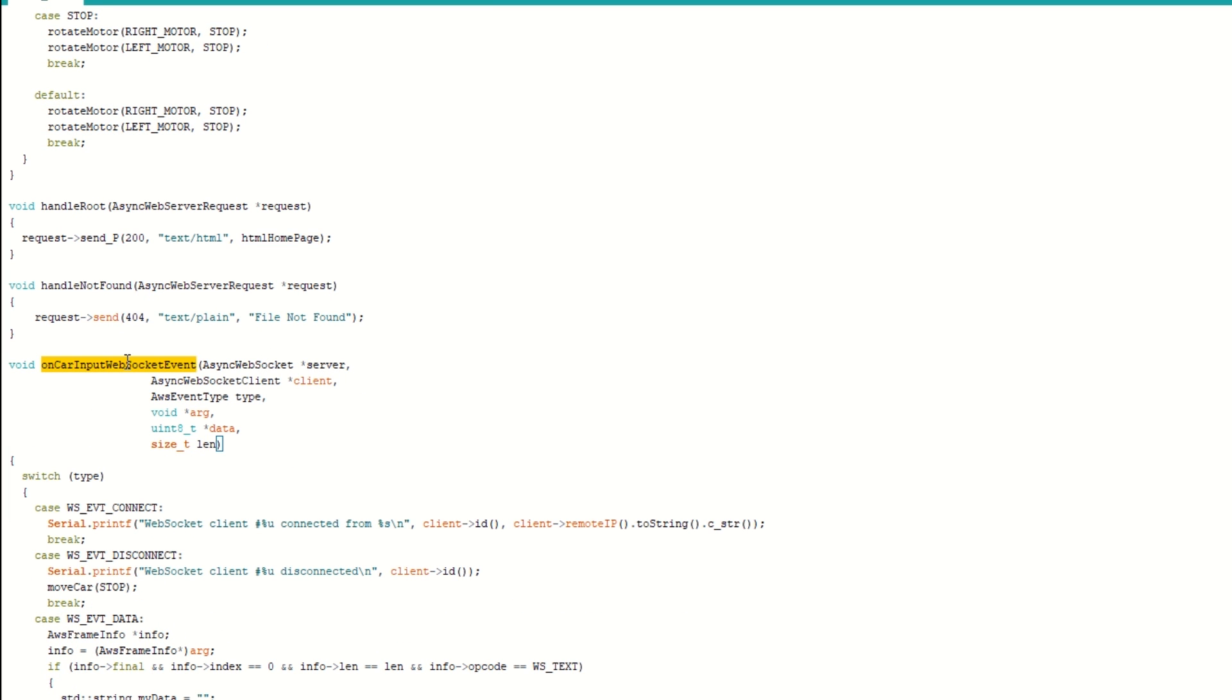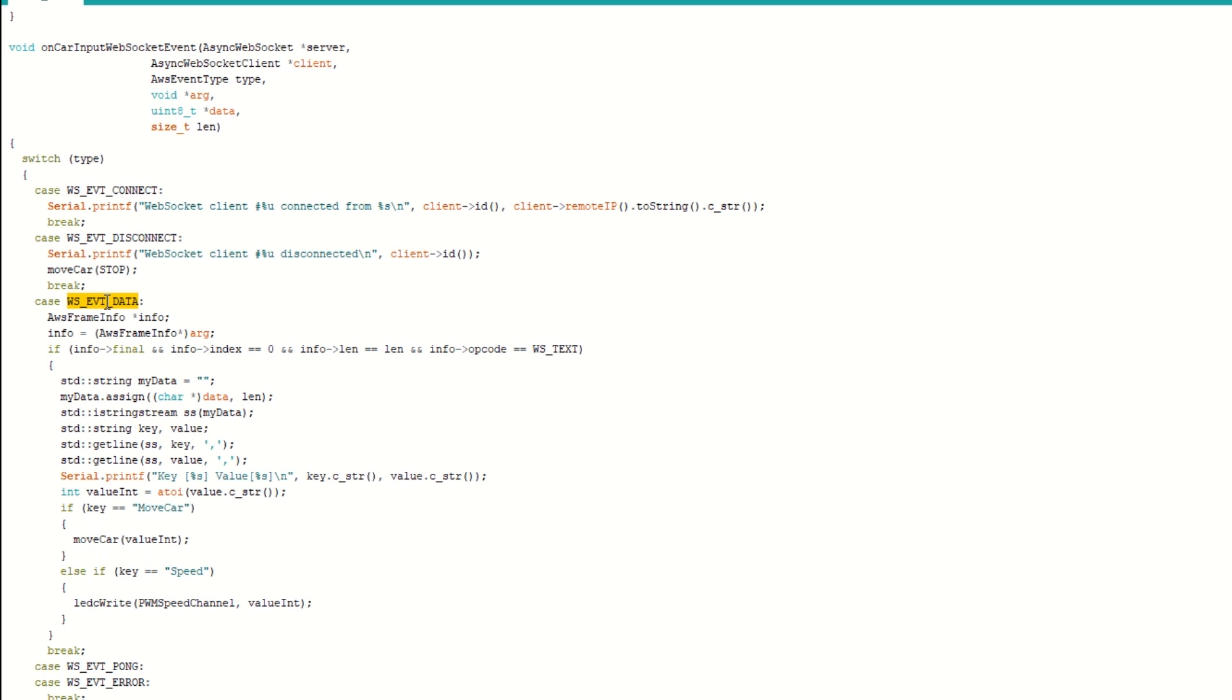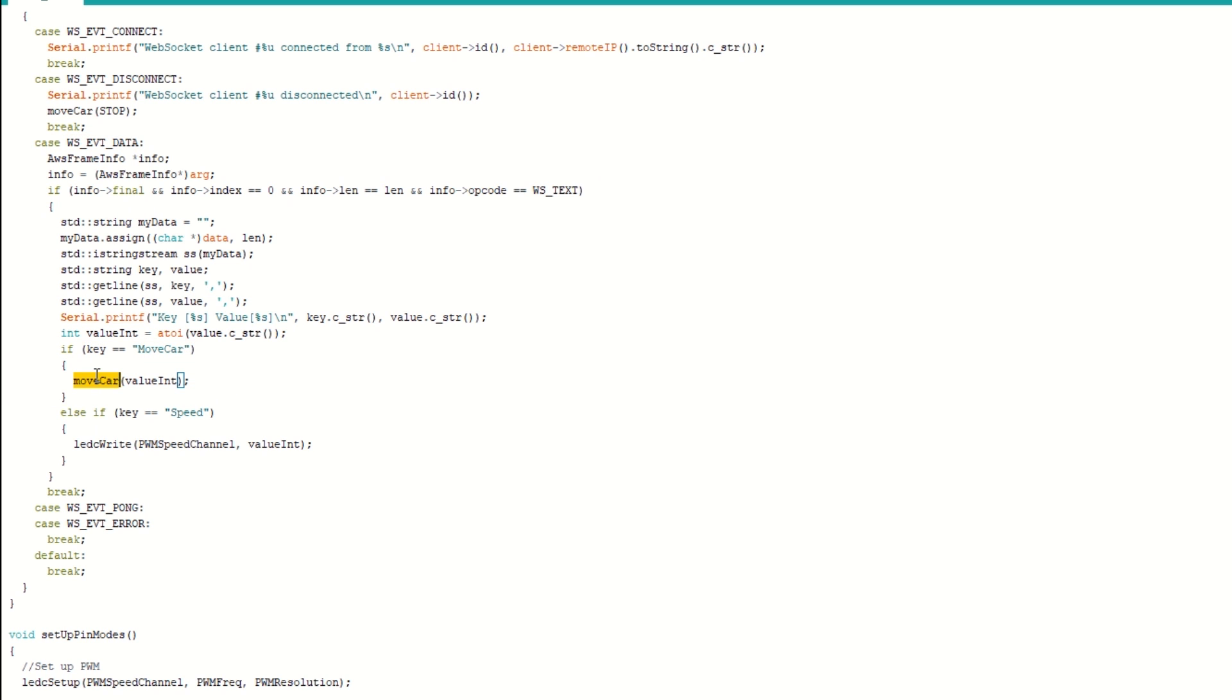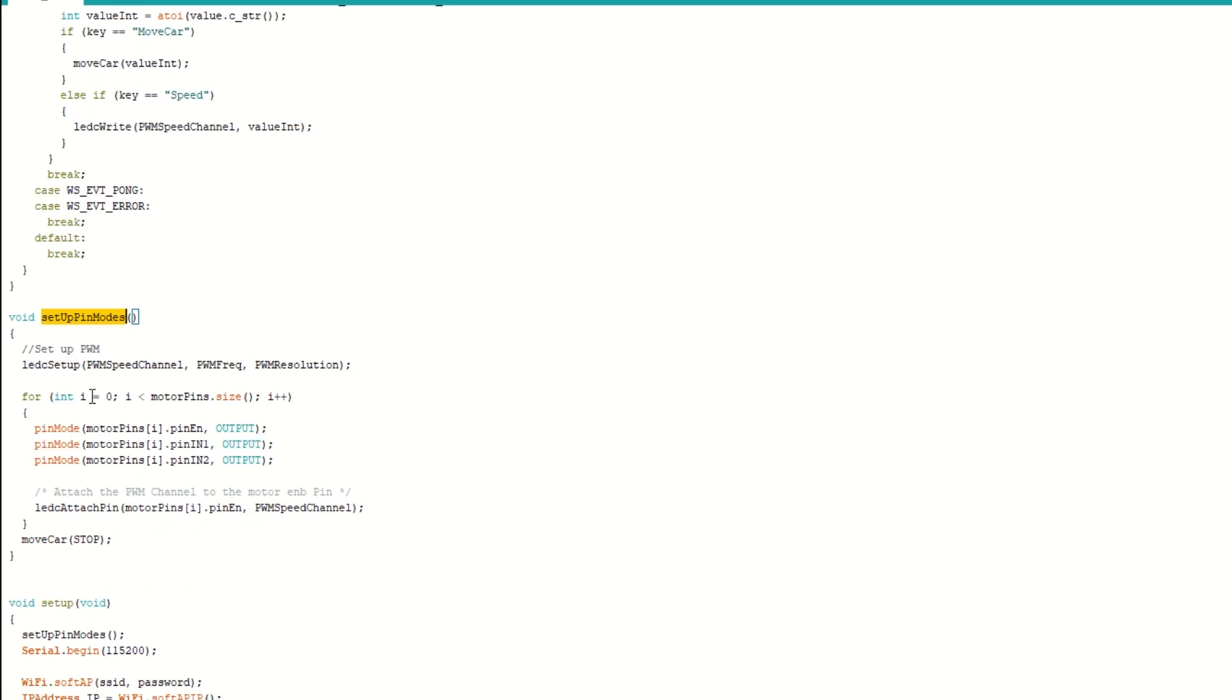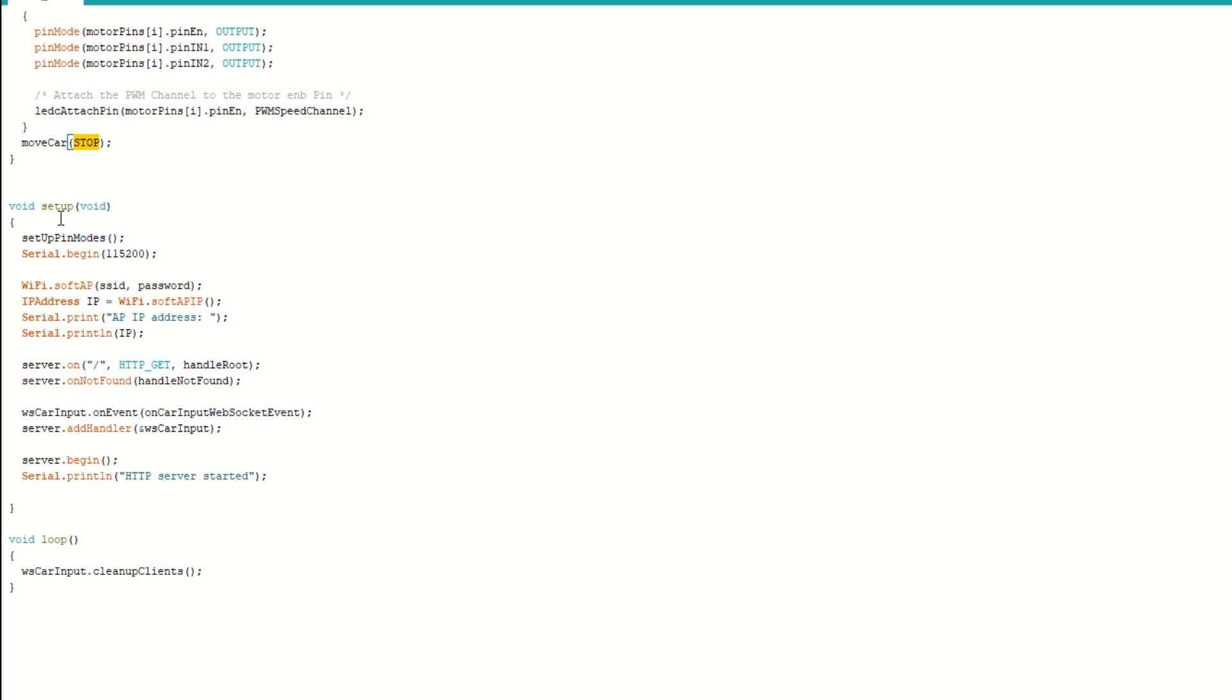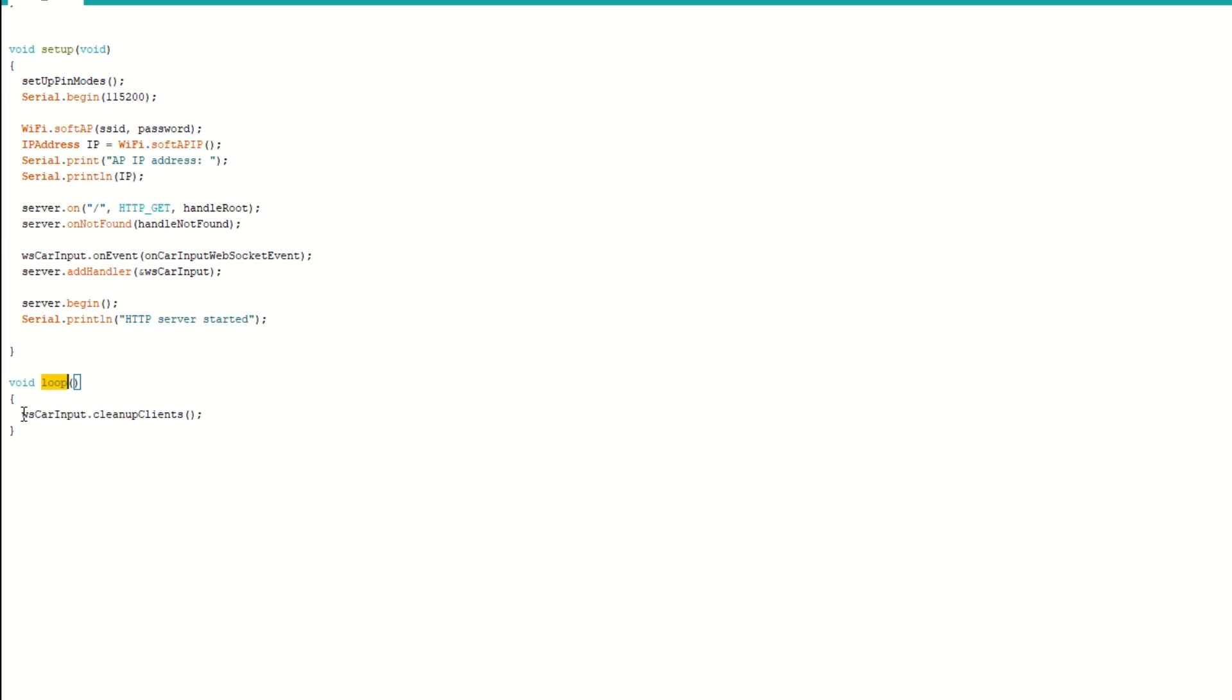We have a handle root function which will send the HTML page when we type the IP address on mobile browser. Then we have an on car input Web Socket event callback function which will be called when ESP32 receives any command from mobile. If the received control is move car, then we will call the move car function. If the received control is speed, then we will set the car speed. We have created a setup pin mode function to set the PWM channel for speed control. It will also set the motor pins as output and initially stop all the motors. Inside the setup function we will call setup pin mode function, then begin Wi-Fi using soft AP mode, set up callback function on root and on not found, then attach the Web Socket handler to the web server and begin the Wi-Fi server. Inside the loop function we just need to call cleanup clients function to clean up old client connections. I have provided the link to the code in the description below. You can upload it directly.